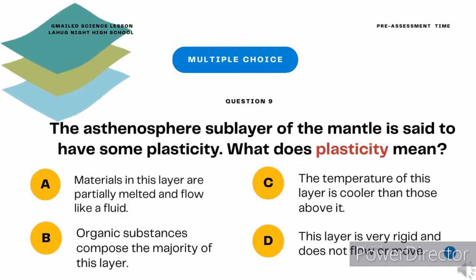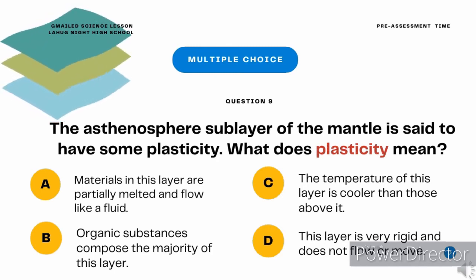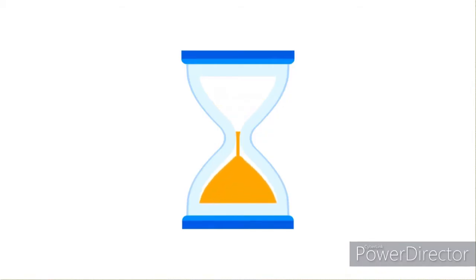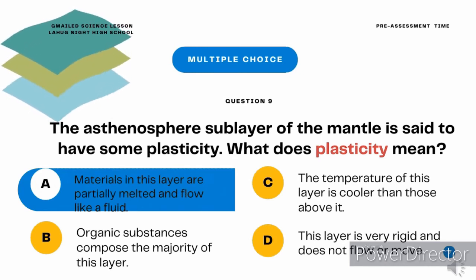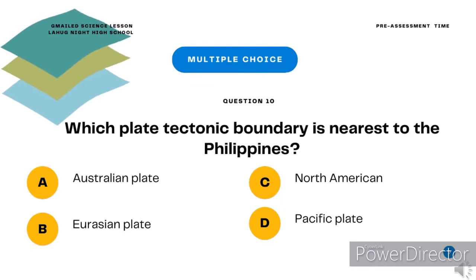Multiple choice question 9. The asthenosphere sublayer of the mantle is said to have some plasticity. What does plasticity mean? A. Materials in this layer are partially melted and flow like a fluid. B. Organic substances compose the majority of this layer. C. The temperature of this layer is cooler than those above it. D. This layer is very rigid and does not flow or move. The correct answer is letter A: materials in this layer are partially melted and flow like a fluid.